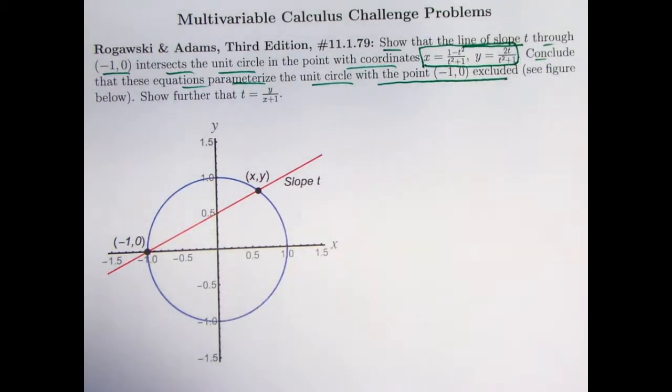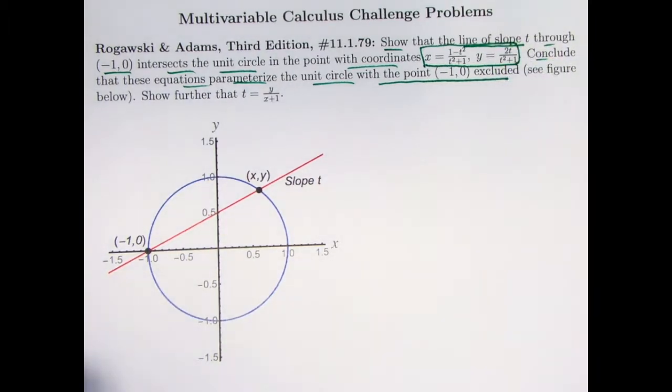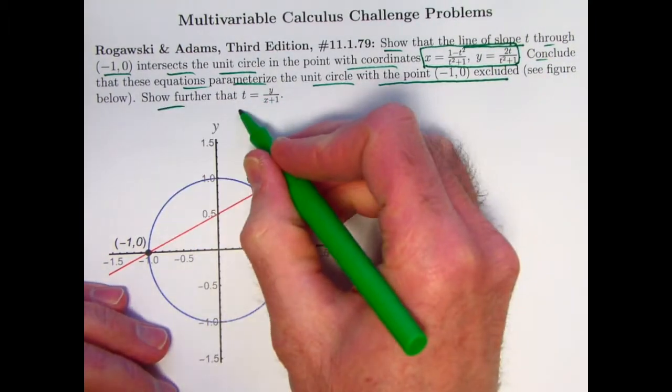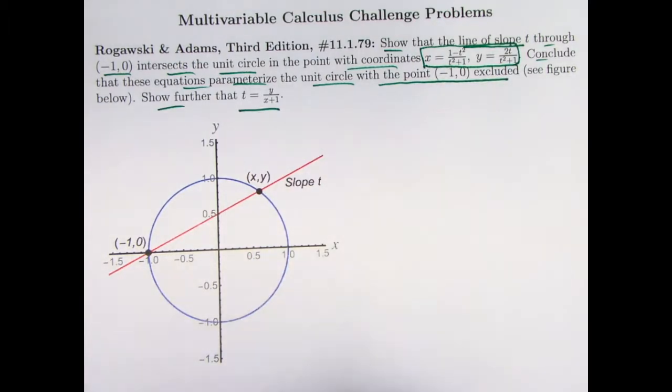Conclude that these equations parametrize the unit circle with the point (-1,0) excluded. That will not actually be a point that is obtained with this parametrization. Maybe you're familiar with using cosines and sines to parametrize the unit circle, so this is something different. These are rational functions, ratios of polynomials.